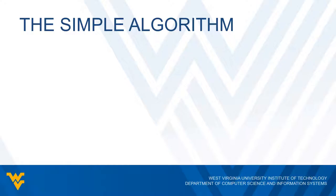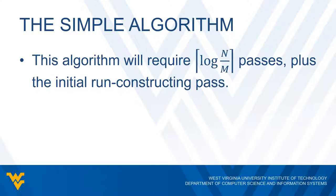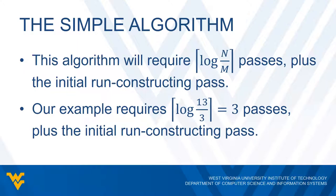This algorithm requires ⌈log(n/M)⌉ passes plus the initial run-constructing pass. In our example with 13 items and M equals 3, we need ⌈log(13/3)⌉ which equals 3, so we have three passes plus the initial run-constructing pass.